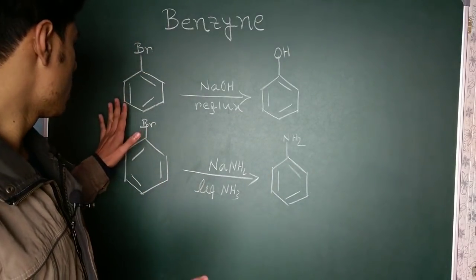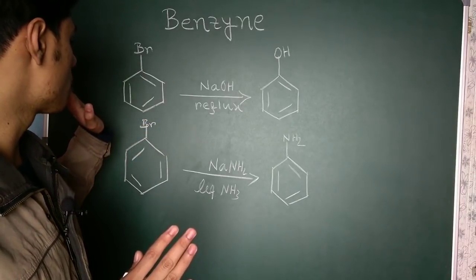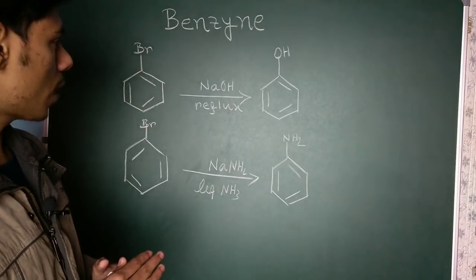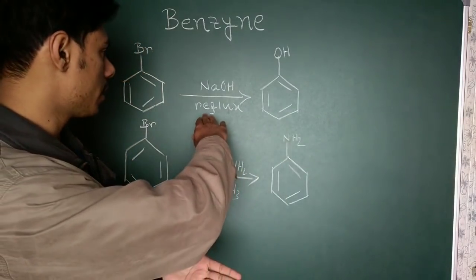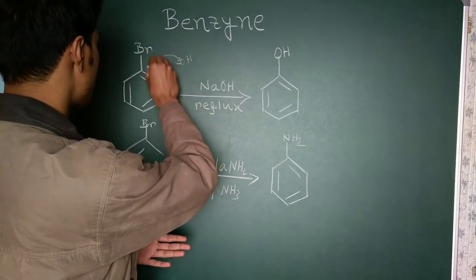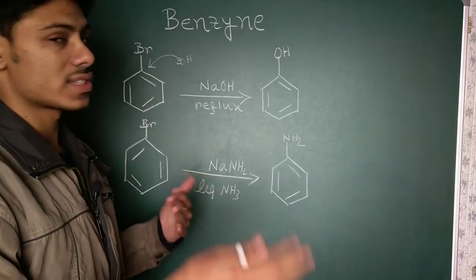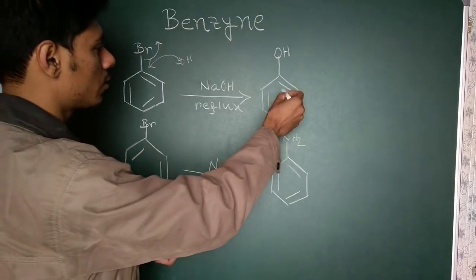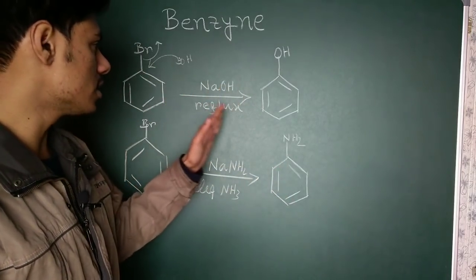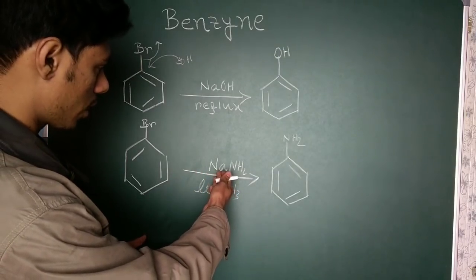Consider bromobenzene with no substituent except bromine. If you want to substitute the bromide with OH minus, you need very drastic, vigorous reaction conditions — for example, reflux with sodium hydroxide at high temperature. The OH minus attacks in what is basically an addition-elimination type reaction. There's no electron-withdrawing group to stabilize the transition state or intermediate, so the reaction needs very drastic conditions.